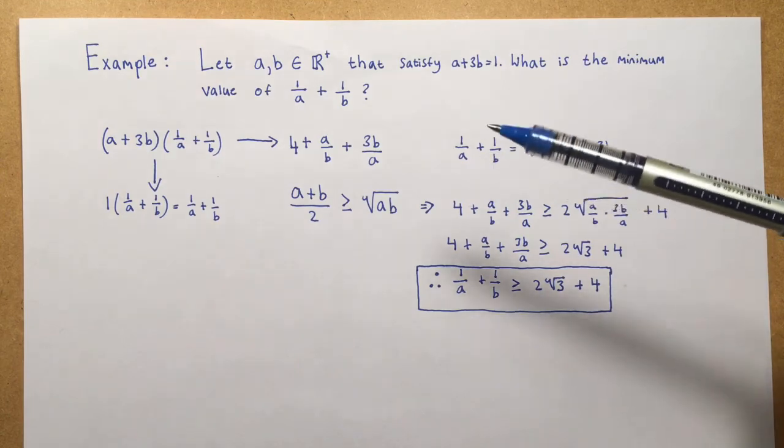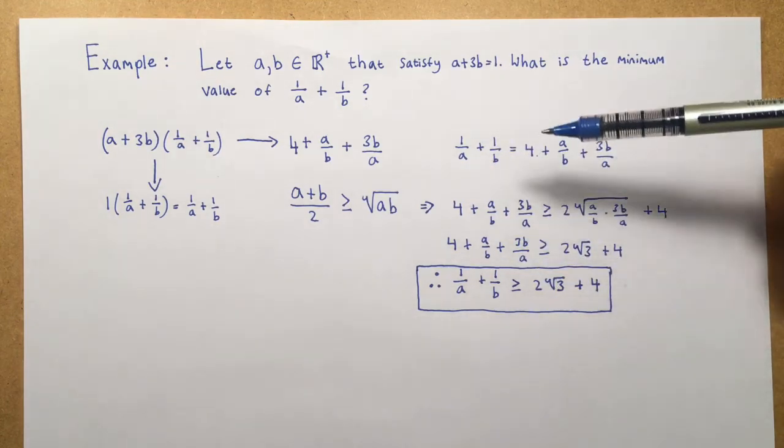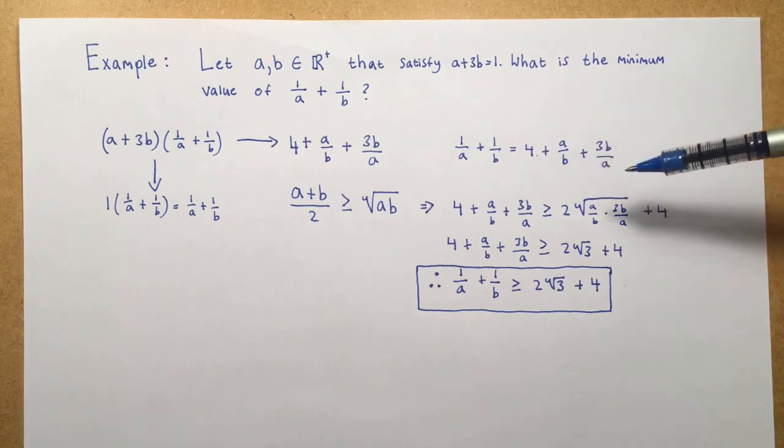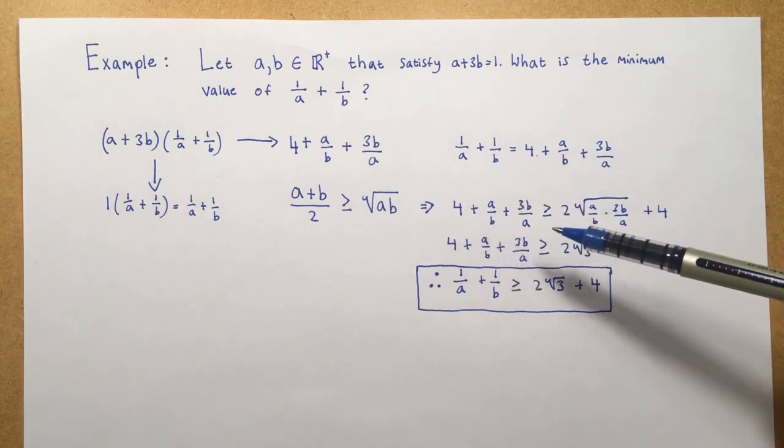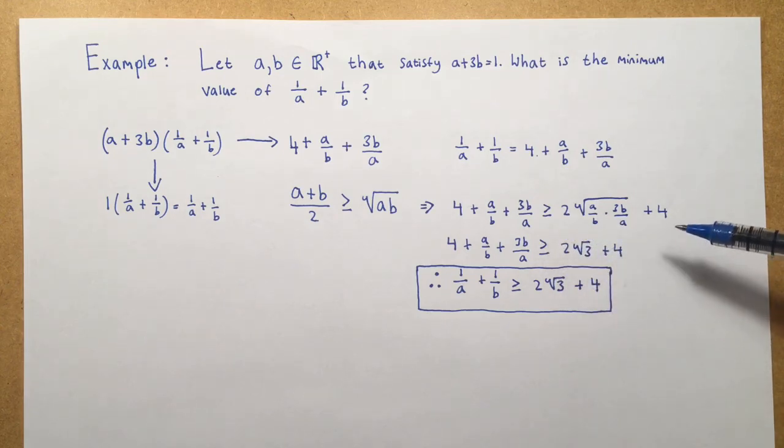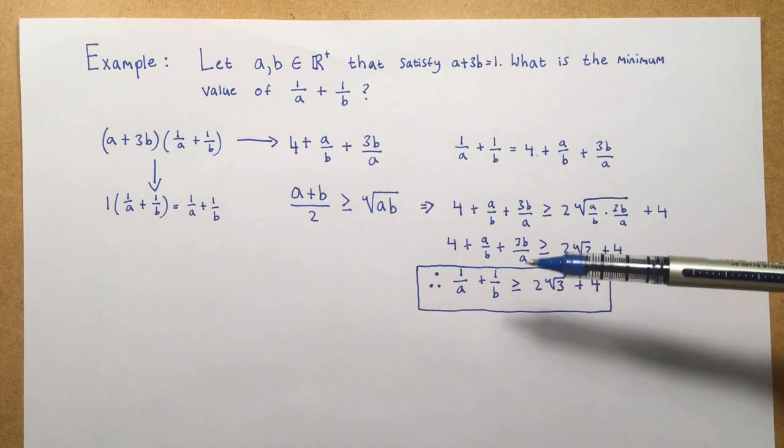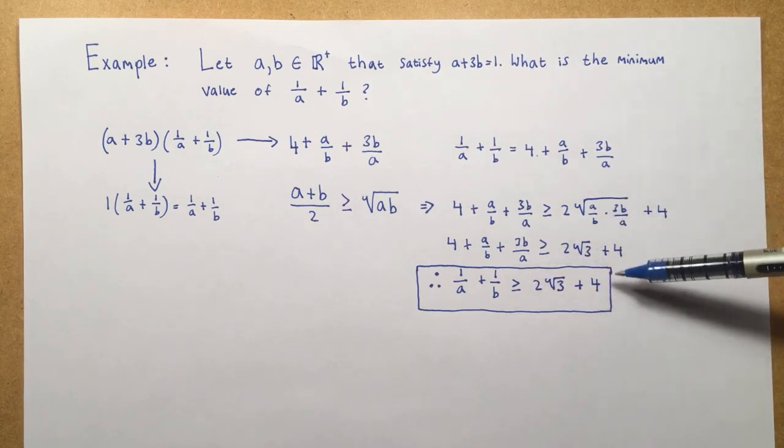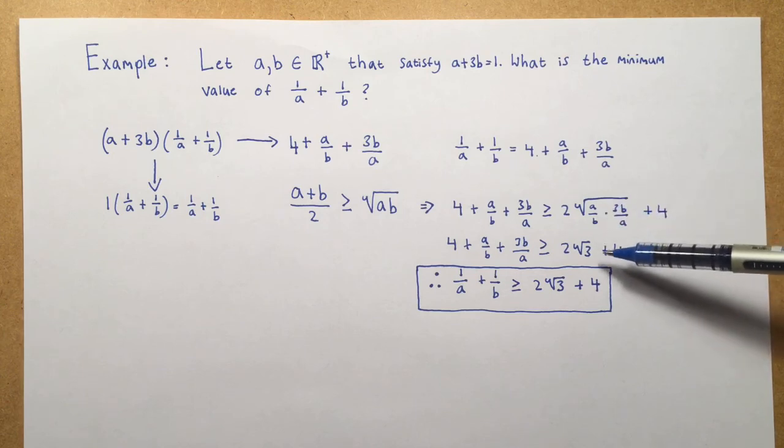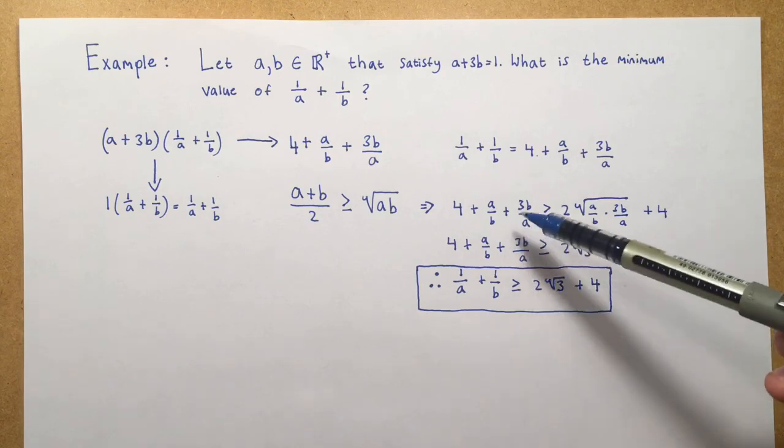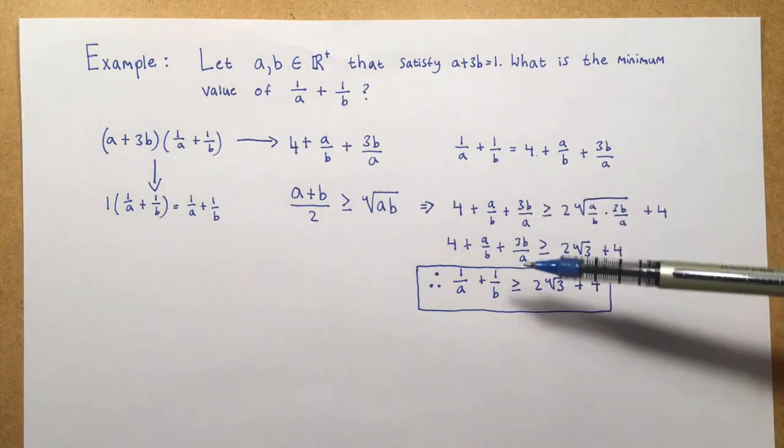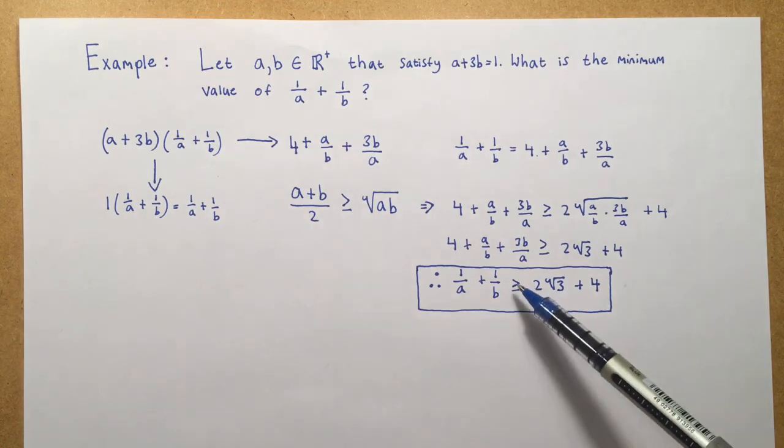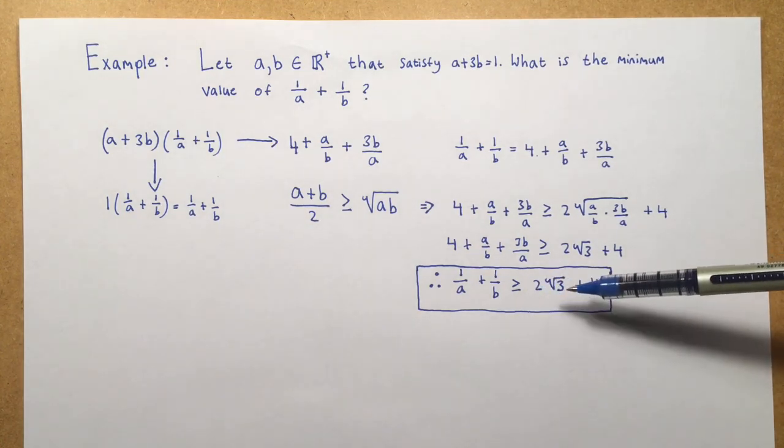So we can then use the AM-GM inequality for two positive real numbers. However, we must notice that this 4 here is just a constant. So this won't change. The only thing that we're trying to find the minimum value of now is this little expression here. So just leave the 4 as a constant. And we have 4 plus a over b plus 3b over a is greater than or equal to 2 multiplied by the square root of a divided by b multiplied by 3b divided by a plus the 4. So the next line of working, the left-hand side does not change. However, the right-hand side, underneath the radical, the a's and b's cancel and we're just left with the root 3. So we know this equality states a relationship between 1 over a plus 1 over b being equal to 4 plus a over b plus 3b over a. So we can just replace this part with that part and it shows the minimum value is greater than or equal to 2 root 3 plus 4.